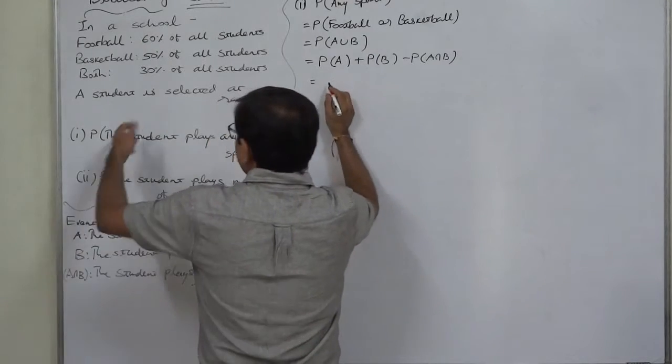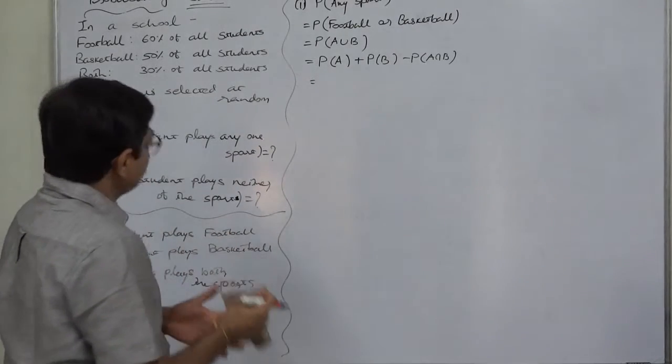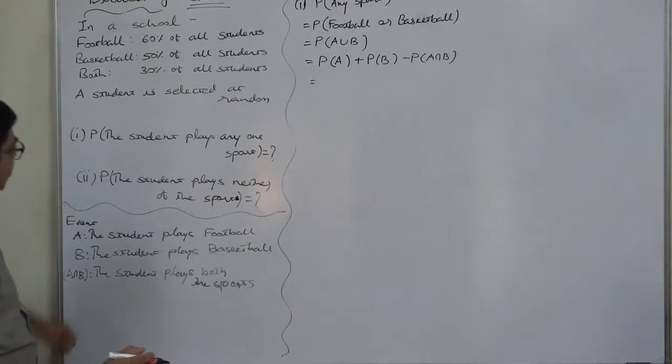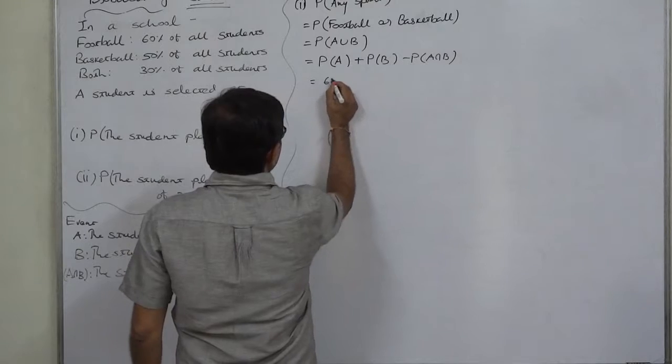And all these three are available in terms of percentages. Football: 60% of all students play football, so any student selected at random being a player of football, the probability is 60%.